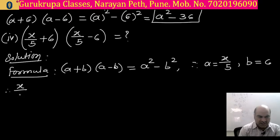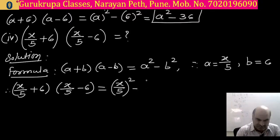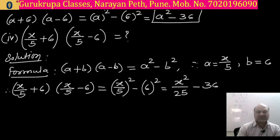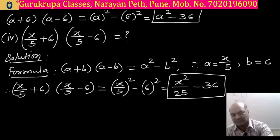So x upon 5 plus 6, first bracket, multiplied by x upon 5 minus 6, second bracket, equals square of x upon 5 minus square of 6. Square of x is x square, square of 5 is 25, so we get x square upon 25. And square of 6 is 36. So the final answer is x square upon 25 minus 36. We have solved all four sums of the first question by using the expansion formula.